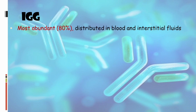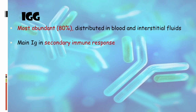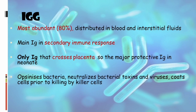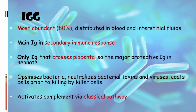IgG contributes to the secondary immune response. It is the only antibody that crosses the placenta, providing protection to the neonate. It opsonizes bacteria and neutralizes bacterial toxins and viruses. Finally, it activates the complement via the classical pathway, so the classical pathway is completely associated with IgG.